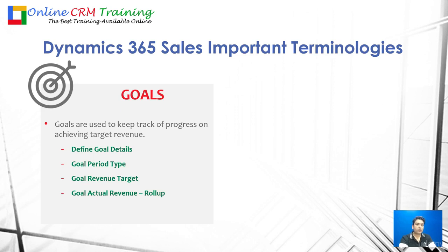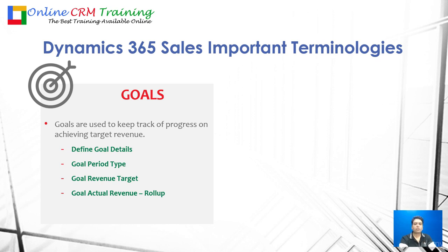The next is goals. Goals are used to keep track of progress toward your targets — whatever revenue you have planned for a particular quarter, year, or half-year. For example, a sales manager needs to meet a $100,000 USD target in a quarter. You can define the period type, the goal revenue target, and track actual performance. As opportunities are closed, the actual sales are automatically calculated — for instance, if the target is $100,000 and your team has closed $20,000, the application gives you a real-time picture of how you are performing.